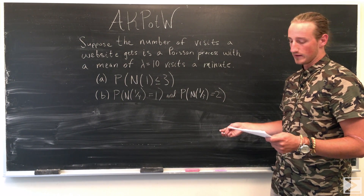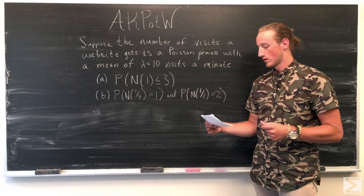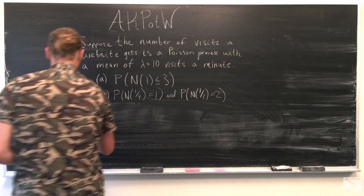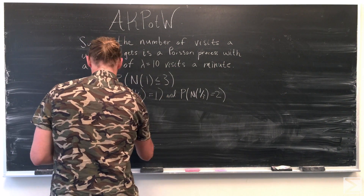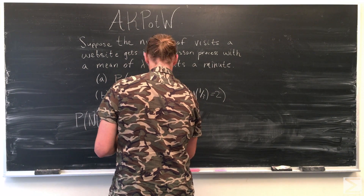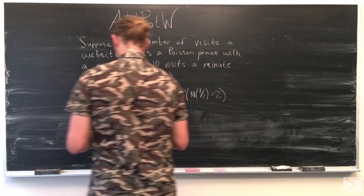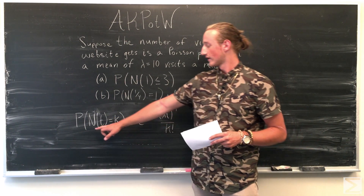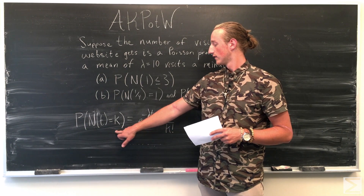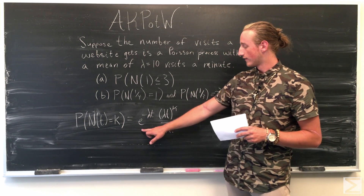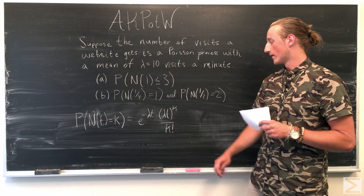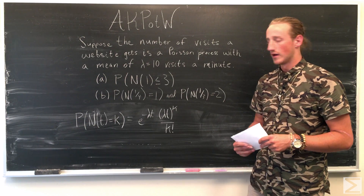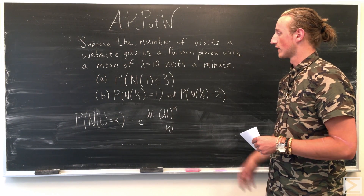For this we're going to need the Poisson distribution, which can be formatted like this. The probability that the number of website visits in time t equals k is given by e to the negative lambda t, multiplied by lambda times t to the k, all over k factorial. We'll use this formula to find both Part A and Part B.